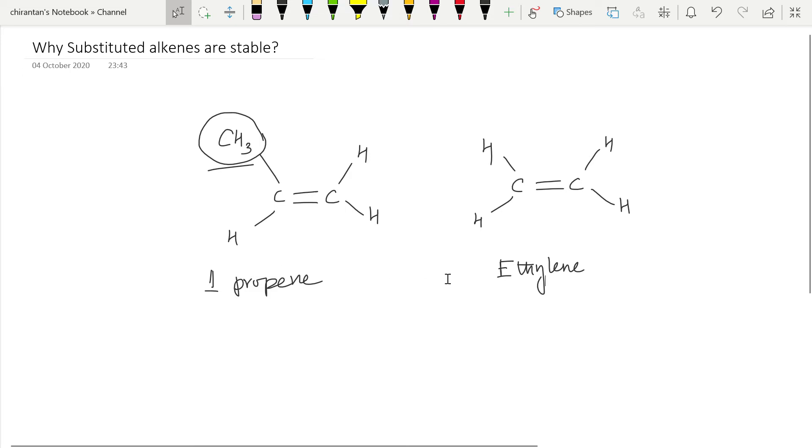If we compare the heat of hydrogenation of these two alkenes, we can find that propene is much more stable compared to ethylene. But why is it so?